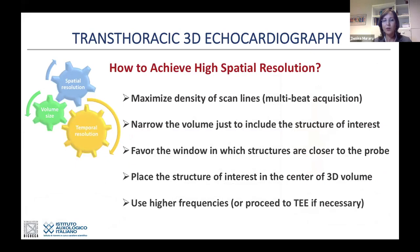To achieve high spatial resolution, understand that you cannot have maximum spatial resolution, temporal resolution, and volume size simultaneously—there is a trade-off. To increase spatial resolution, obtain the maximal density of scan lines, usually achieved by multi-beat acquisition if the patient is in sinus rhythm. The narrower the volume, the better—just include the structure of interest. Favor the window in which structures are closer to the probe; parasternal windows are much better if good quality. Place the structure of interest in the center of the 3D volume, and increase the frequency whenever possible. When possible, go for transesophageal.